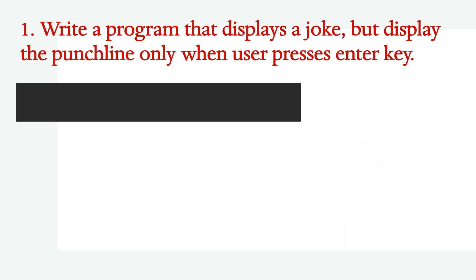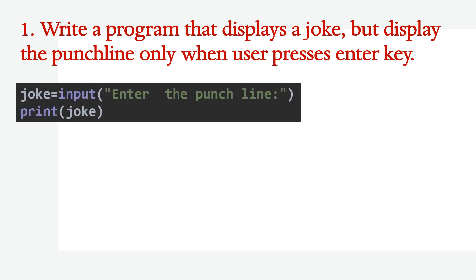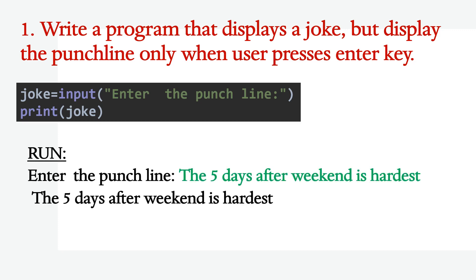Write a program that displays a joke but displays the punchline only when the user presses the Enter key. For that purpose we take one string as input from the user and store it in a variable called joke. Within that you can write a line 'enter the punchline'. Then it will ask you to enter the punchline and after that it will print that one. Here I have written 'the 5 days after weekend is hardest', so we can just put that one and it will be printed.